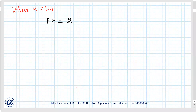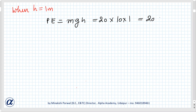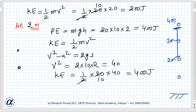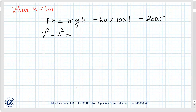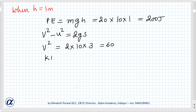When the object is at 1 meter: potential energy is m × g × h = 20 × 10 × 1 = 200 joules. For kinetic energy, using v² − u² = 2gs, u is 0 and the distance from 4 meters to 1 meter is 3 meters. So v² = 2 × 10 × 3 = 60. Kinetic energy is half mv² = ½ × 20 × 60 = 600 joules.